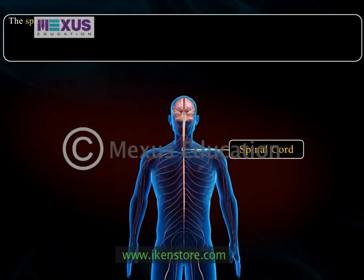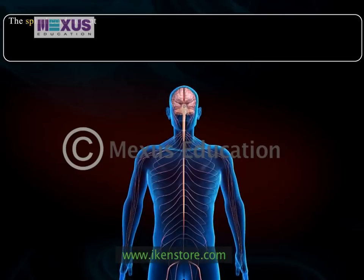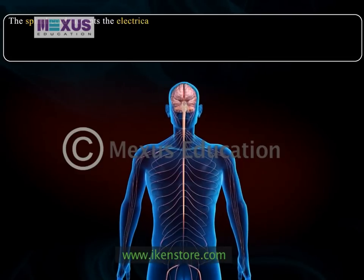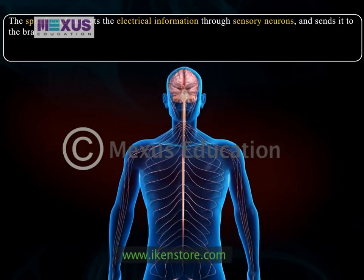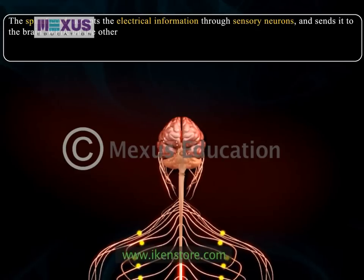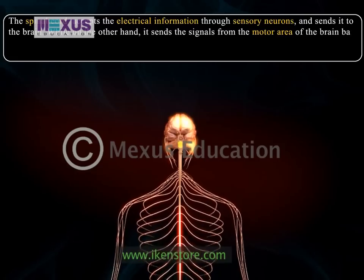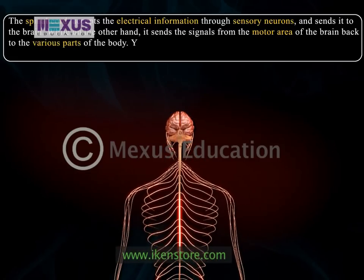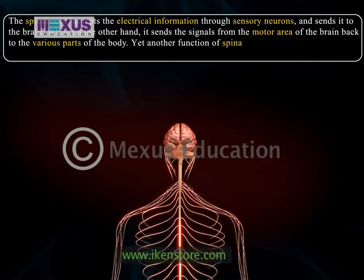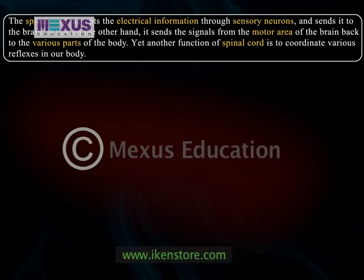The spinal cord helps in connecting the various organs of the human body to the brain. On one hand, it accepts electrical information through sensory neurons and sends it to the brain. While on the other hand, it sends signals from the motor area of the brain back to the various parts of the body. Yet another function of the spinal cord is to coordinate various reflexes in our body.